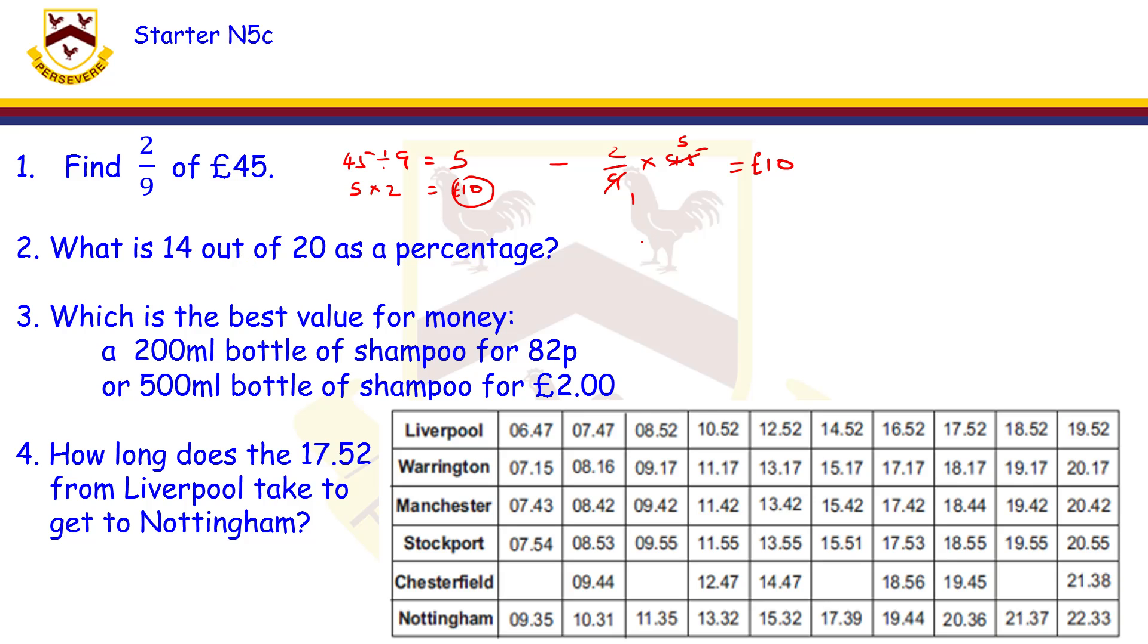Work out 14 out of 20 as a percentage. 14 out of 20 means 14 over 20. Percentage means out of 100, so to go from 20 to 100 times by 5, we've got to do the same thing to the numerator. 14 times 5 gives us 70. 70 out of 100 means 70 percent.